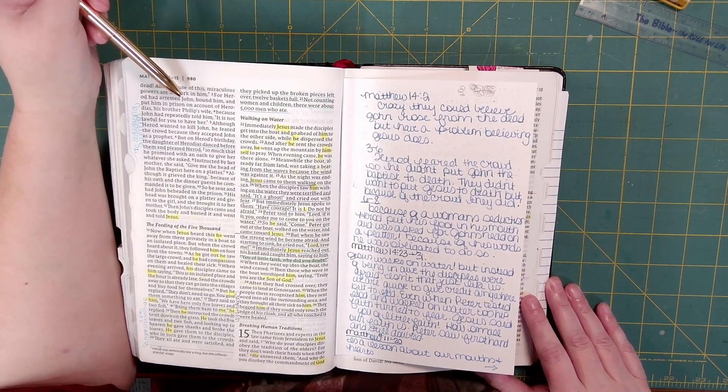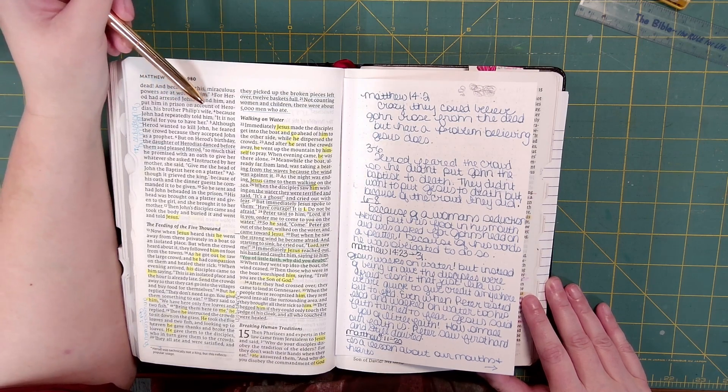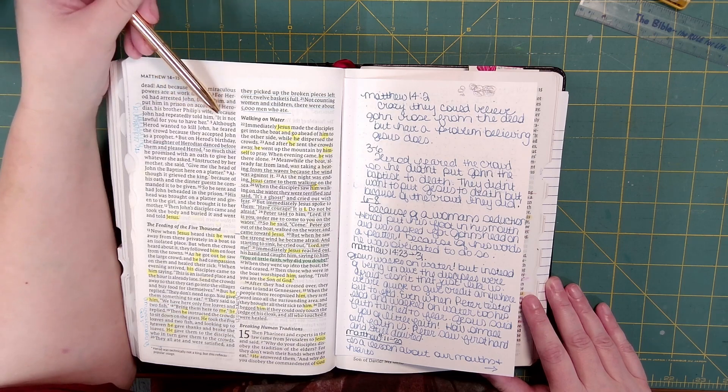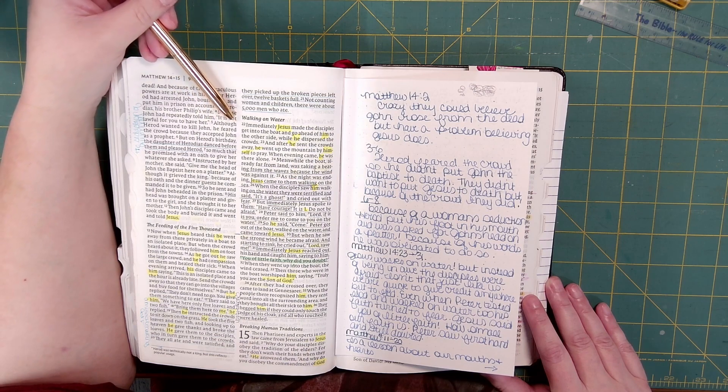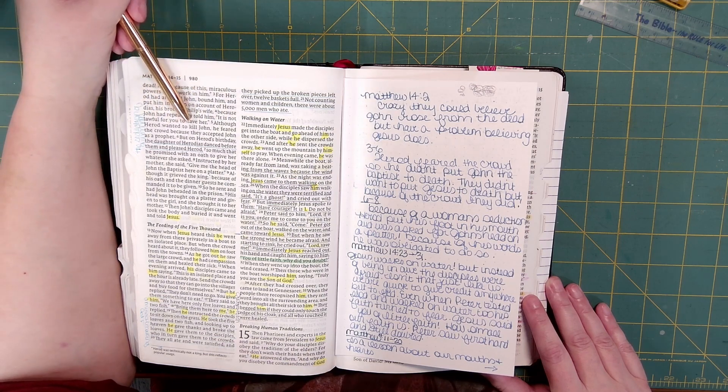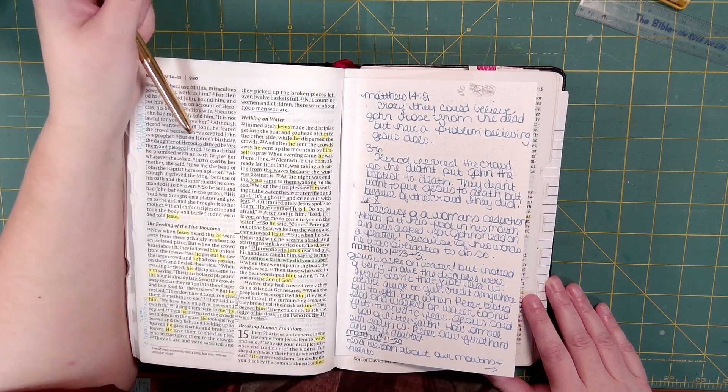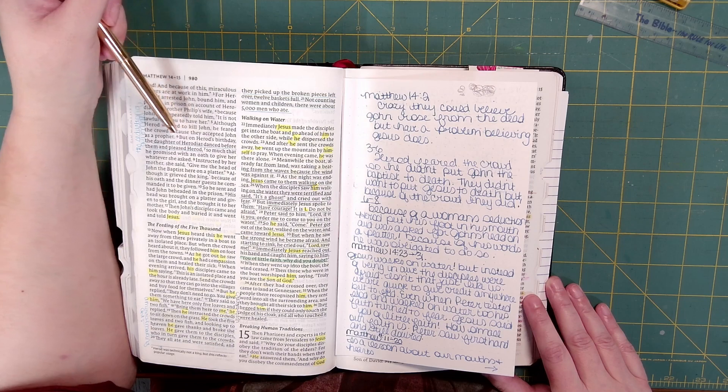For Herod had arrested John, bound him, and put him in prison on account of Herodias, his brother Philip's wife, because John had repeatedly told him, it is not lawful for you to have her. Although Herod wanted to kill John, he feared the crowd because they accepted John as a prophet.